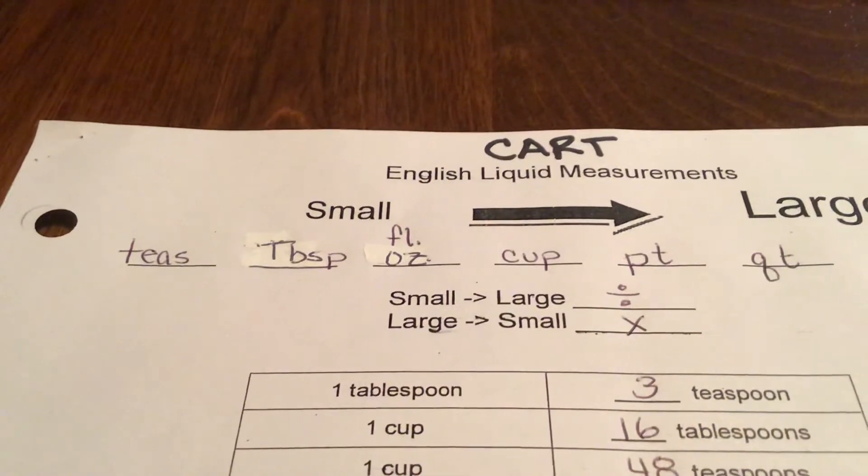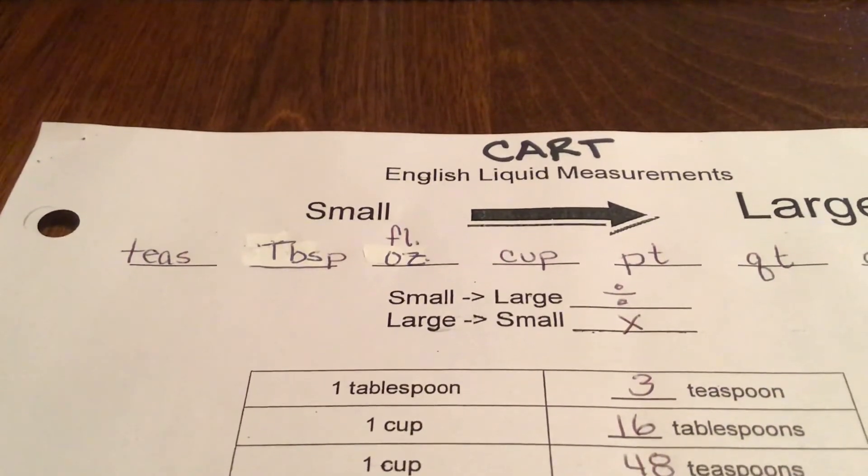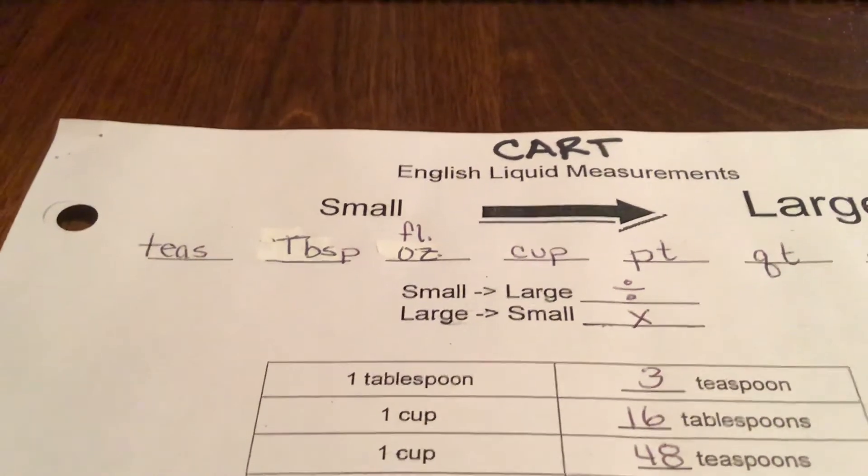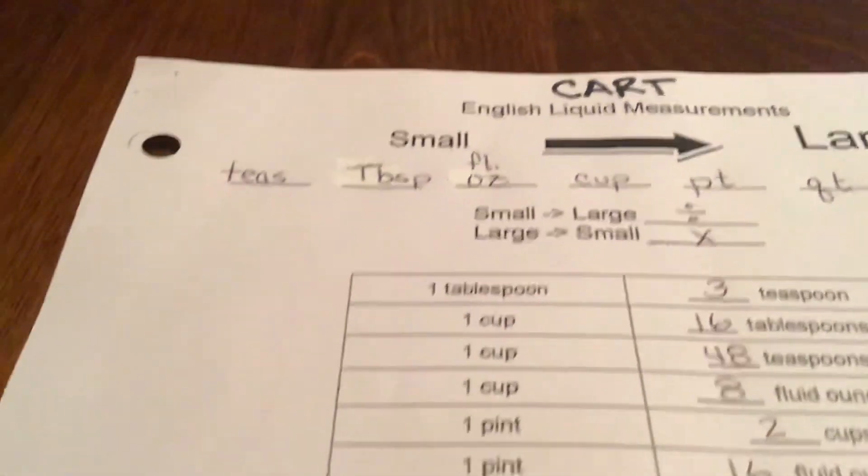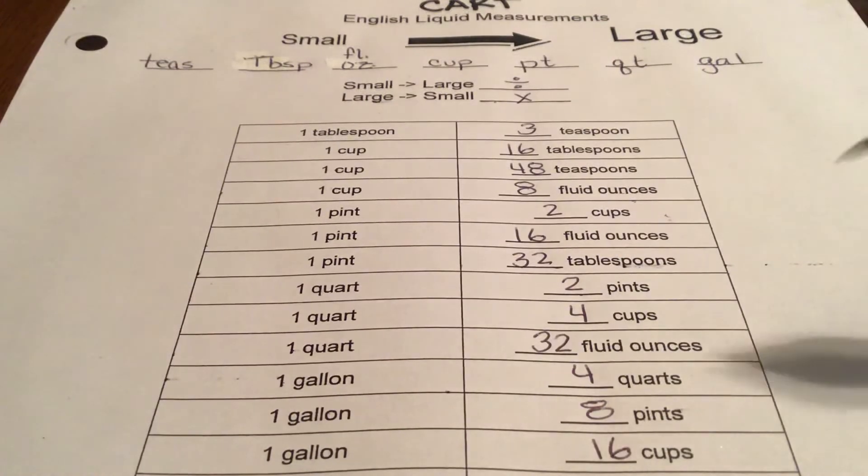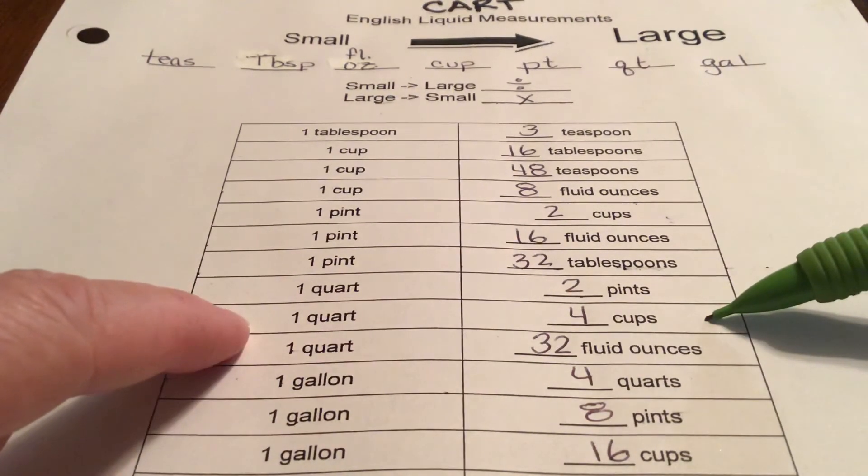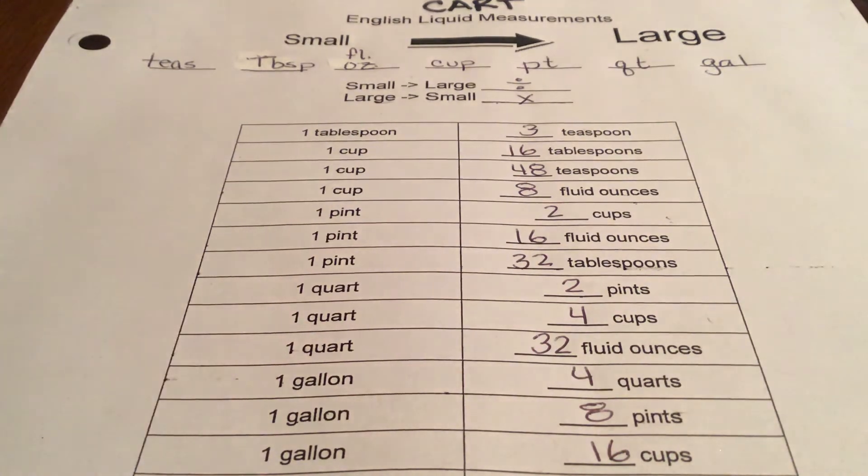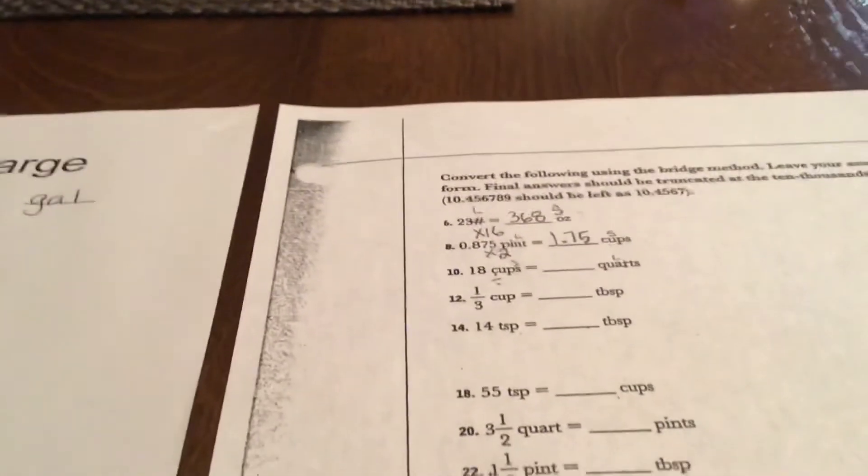See, back here with our rule, if we are going from a small unit to a larger unit we're supposed to divide. And we're working with cups and quarts. So if you don't know how many cups are in a quart, you come to your table and you look up that there's four cups in a quart.